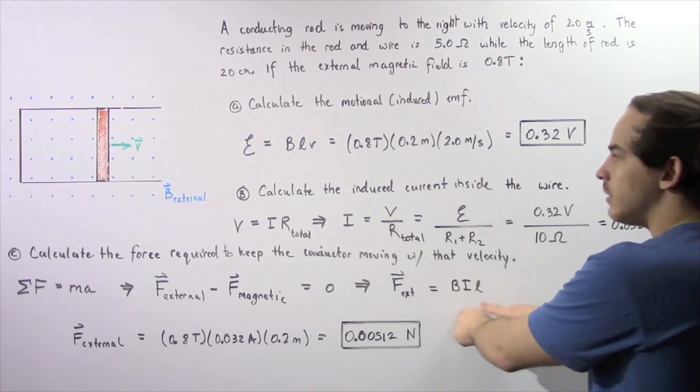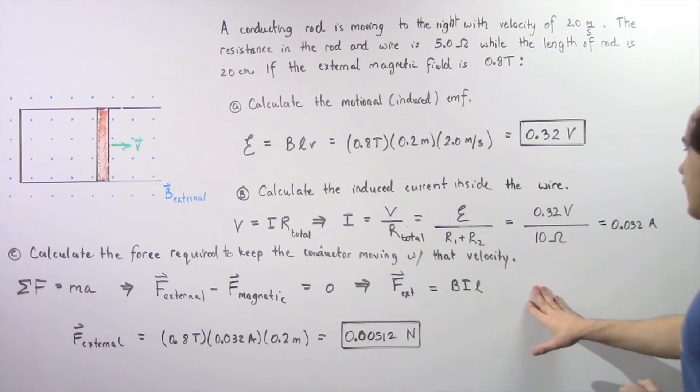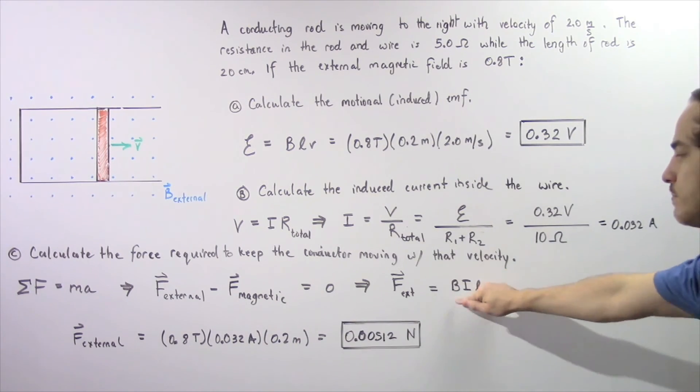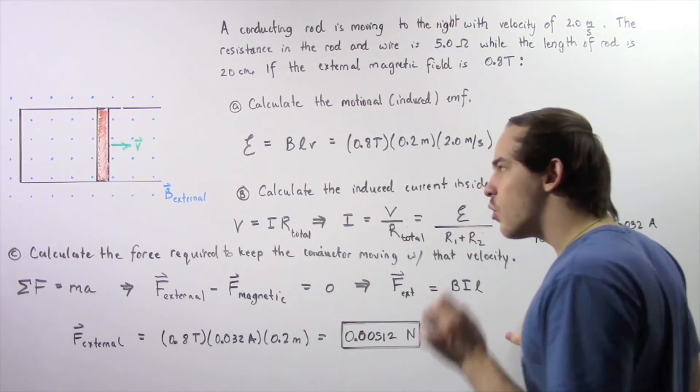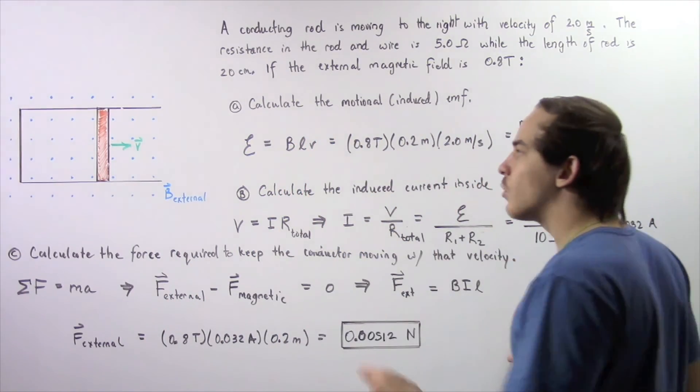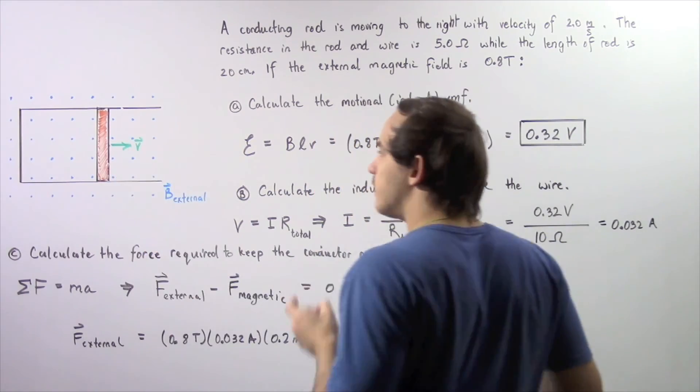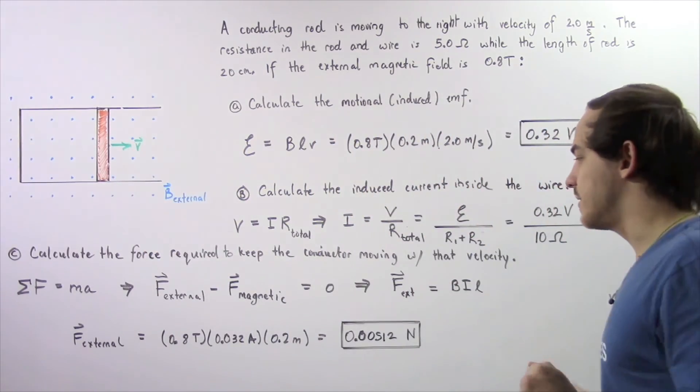Recall that in part B, we were able to find our I. We know what L is and what B is, so now we can solve for the external force that is required to give our object a constant velocity of V.